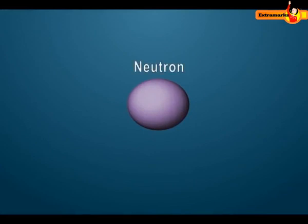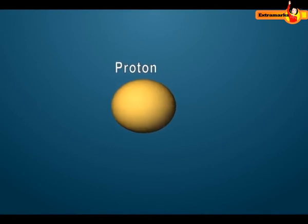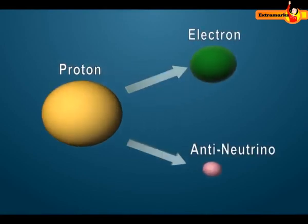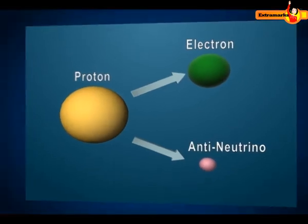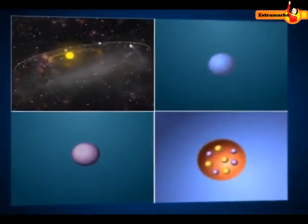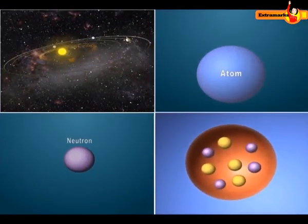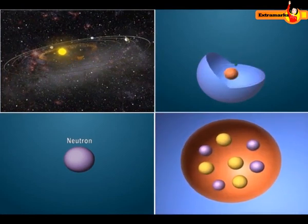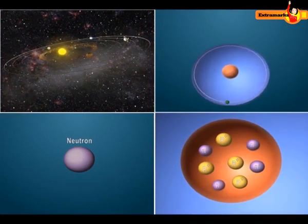Neutrons get converted into protons, electrons, and antineutrinos. In each case, there exists a force. Can you tell which type of force acts?